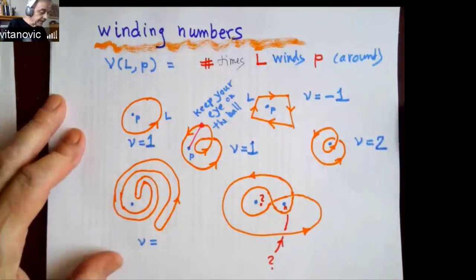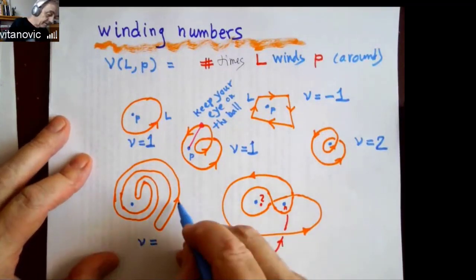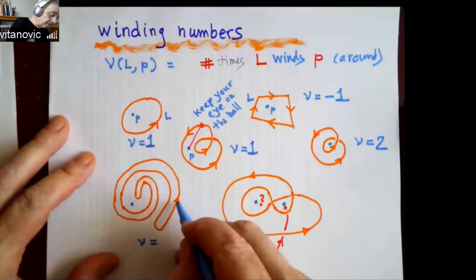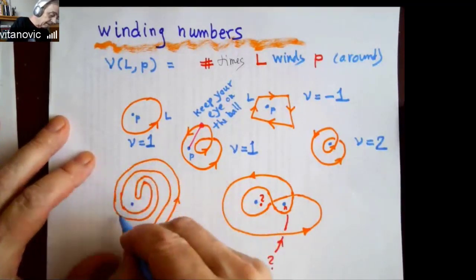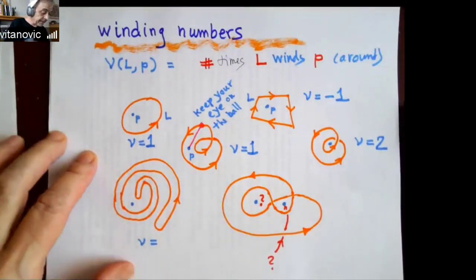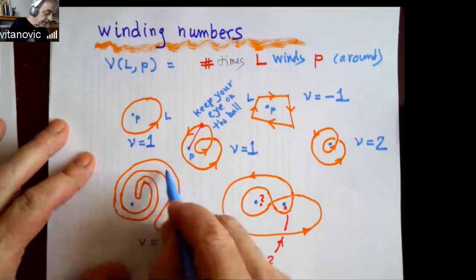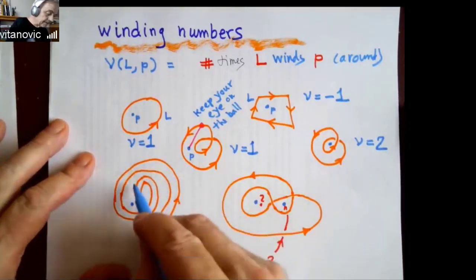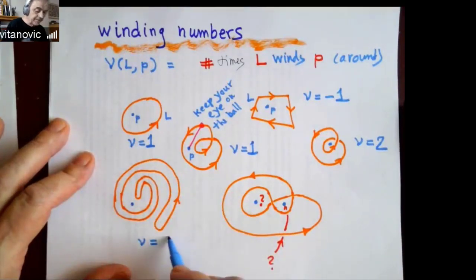Suppose your beloved infant is doing a very complicated thing — running this way, running this way, coming back, running the other way, and starting at a point. Half of the time you're winding this way, but then when you reverse it goes the other way, and the total winding is zero.